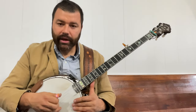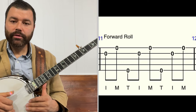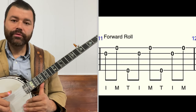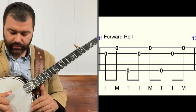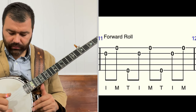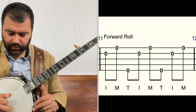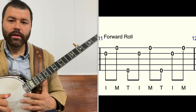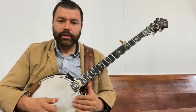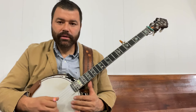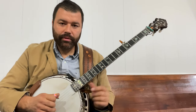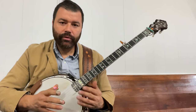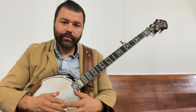The last roll we want to look at is a forward roll. In this forward roll, we're going to go two, one, five, two, one, five, two, one. Keep in mind when we put these rolls into the context of a tune, we may only play a snippet or a small portion of them, but we'll learn the full rolls as we're starting.